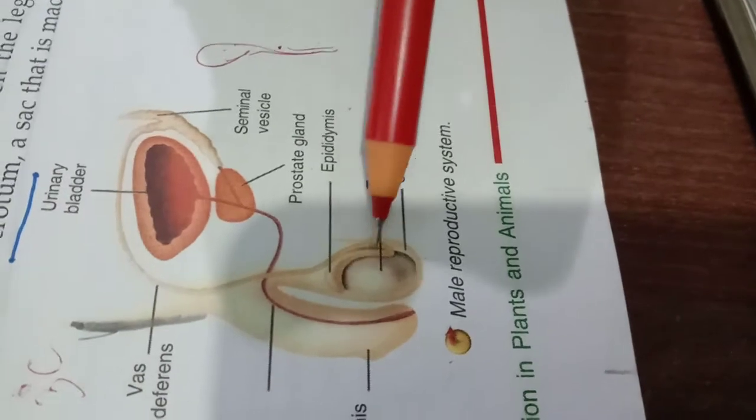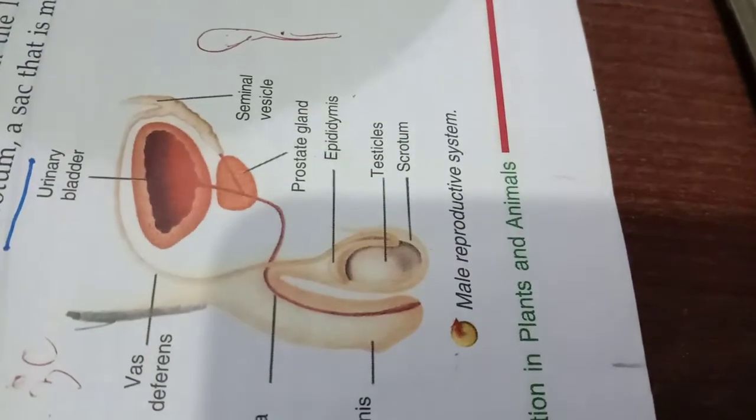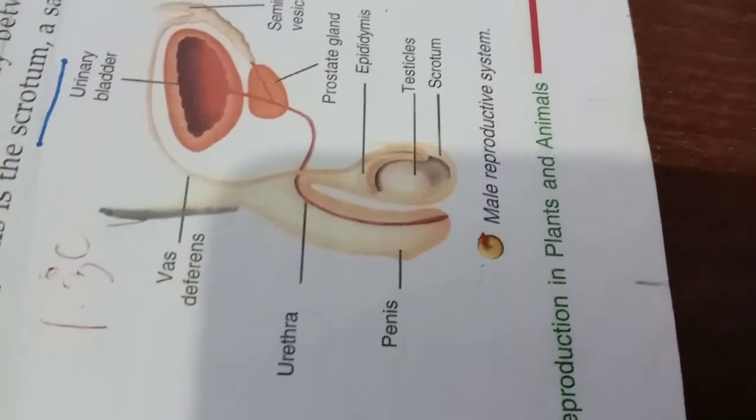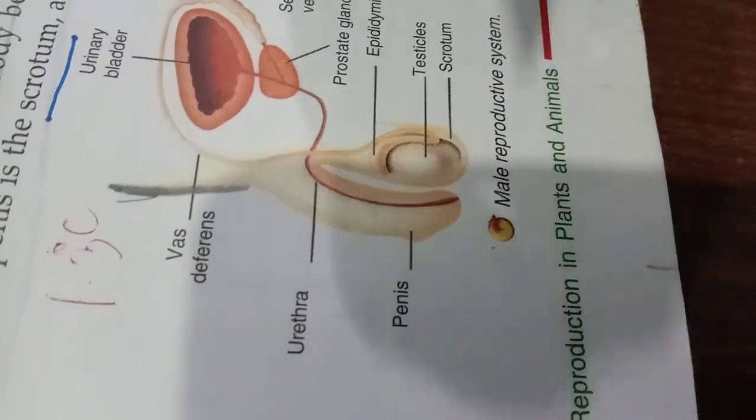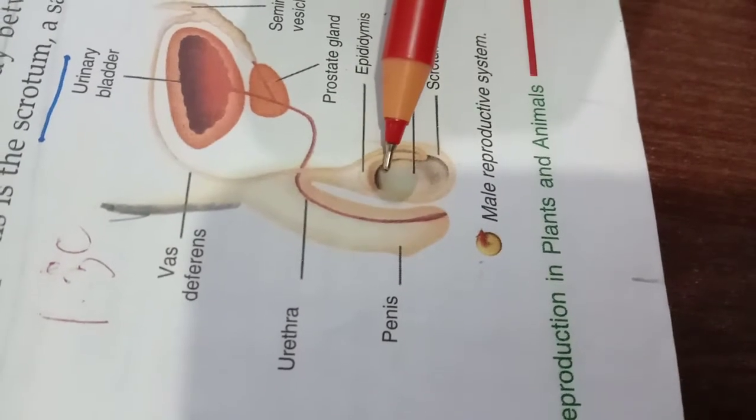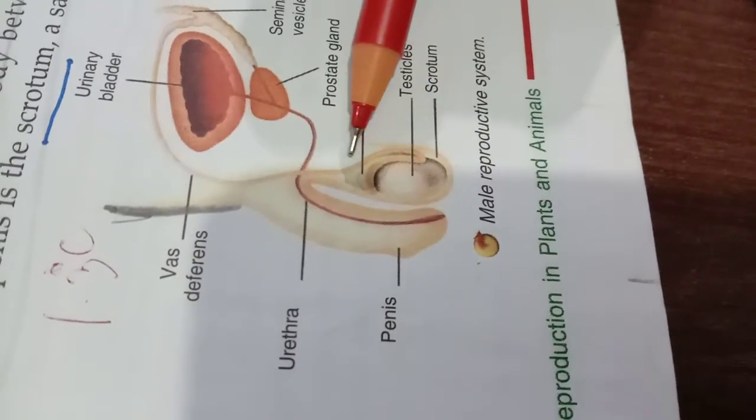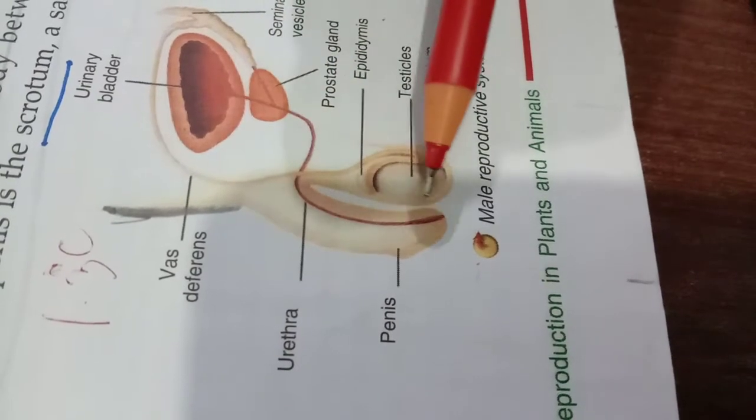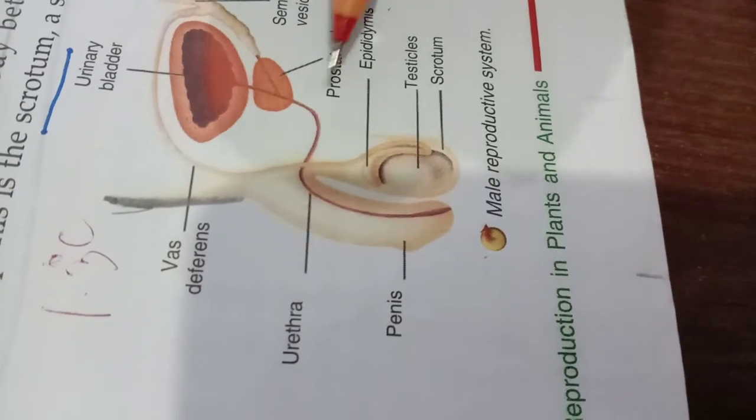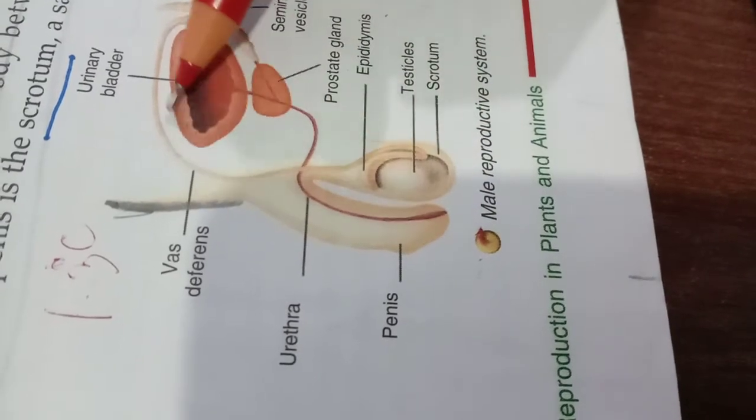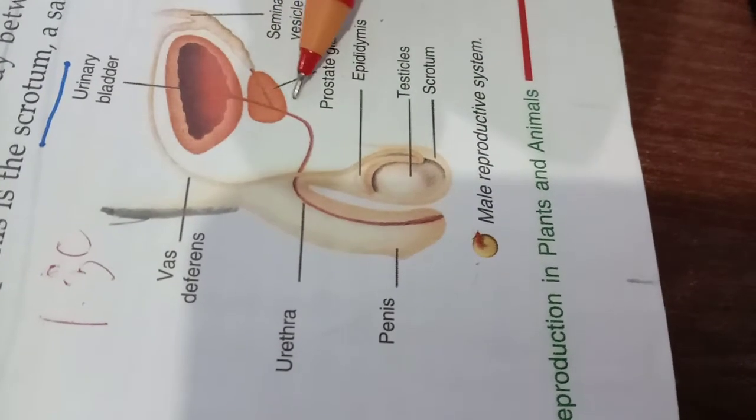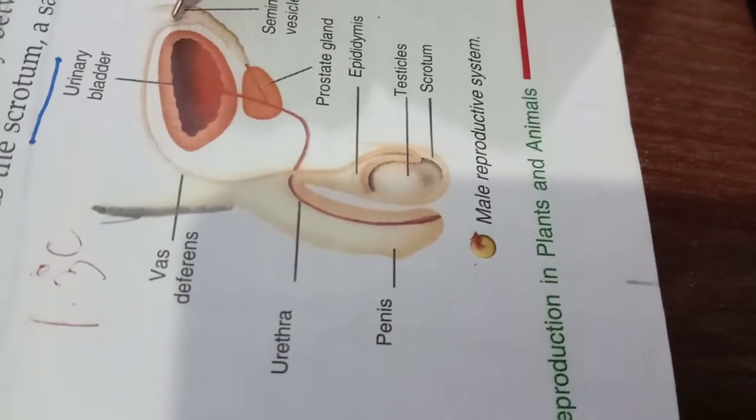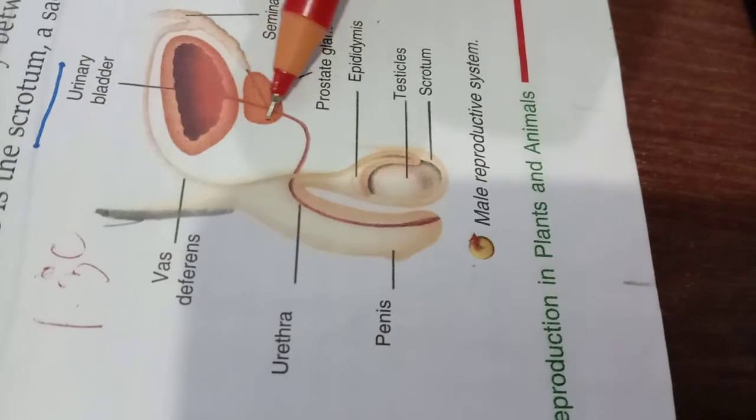Next, you see that from the epididymis, a tube-like structure called as vas deferens emerges. So what is the function of vas deferens? It transports the sperms from the epididymis to the uterus or the copulatory organ. So you can see the vas deferens, it goes around the urinary bladder and that is behind the urinary bladder.